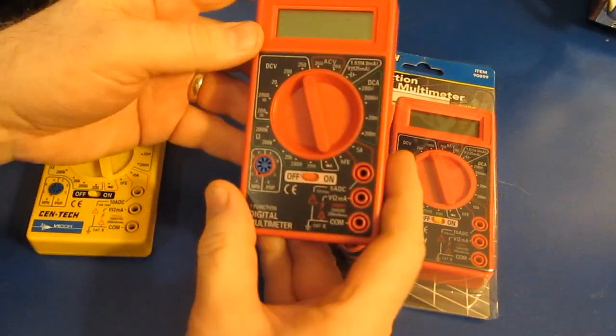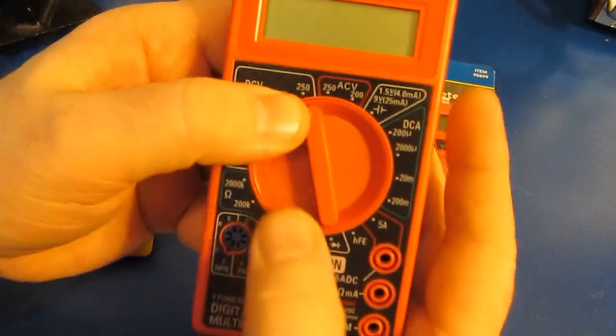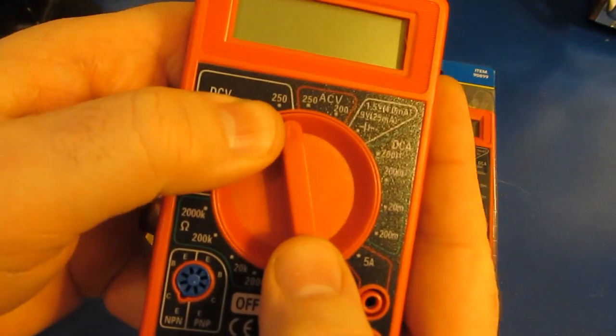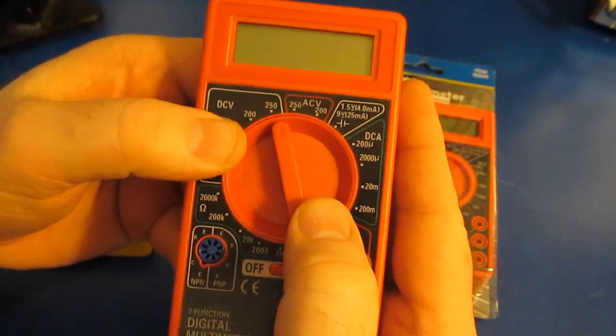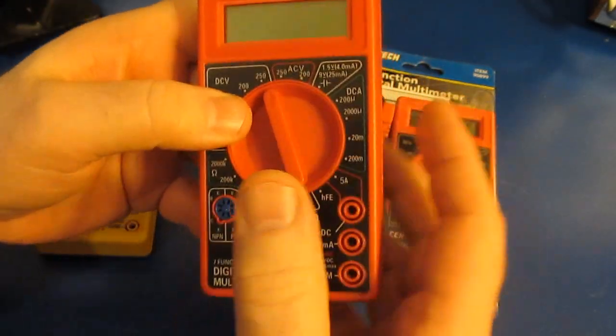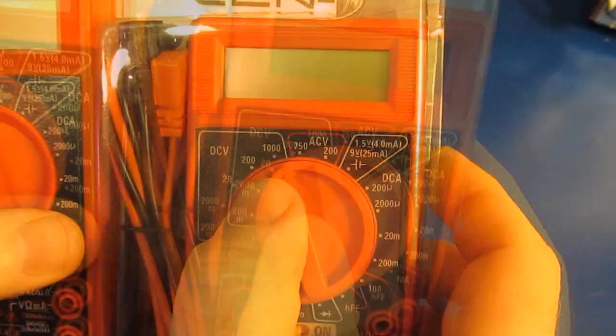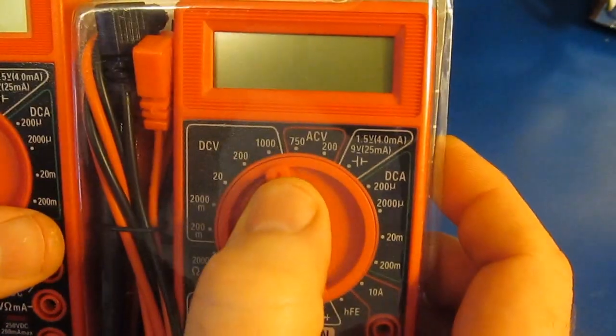They've changed the design on these, and you can see this is the latest design marked 250 volts DC max, 250 volts AC. This is an earlier design and you can see these were marked for 1000 volts DC and 750 volts AC.